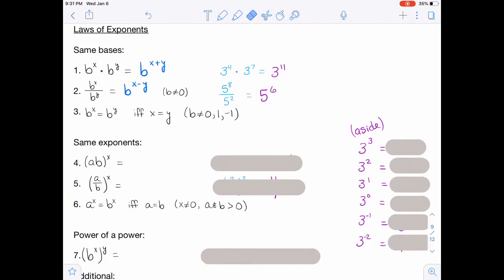I did not do an example numerically for number three, but it says that if you have b to the x and it's equal to b to the y, that's true if and only if x is equal to y. And that should make sense to you. The b's are the same, so in order for it to be true, the x and the y have to be equal. And we do exclude b being equal to 0, 1, or negative 1. If you were to use any of those, you could have a true statement even if the x and the y were not equal, and so that's why we have to exclude those.